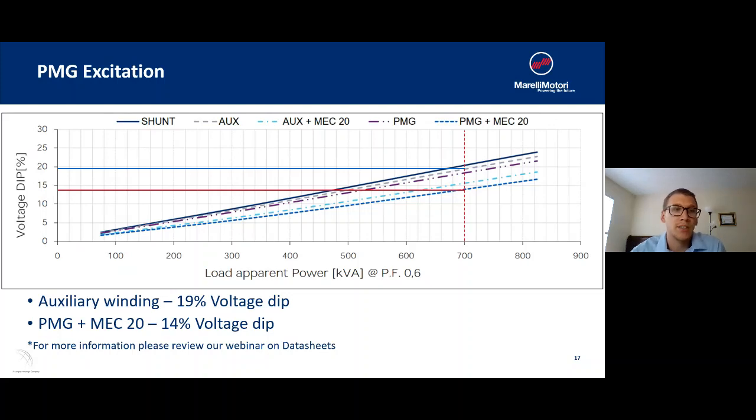Look here at an example of starting a motor with an alternator. Here we have a 700 kVA load. We're going to look at the difference in the AVR with an auxiliary winding versus a PMG with a digital AVR, which is our MEC 20. If we try to start this 700 kVA load with just an auxiliary wound system, we're going to experience a 19% voltage dip. But if we add the PMG with the digital AVR, we're only going to see a 14% voltage dip. For a little bit more information on what you're looking at here, please refer to one of our previous webinars on data sheets.